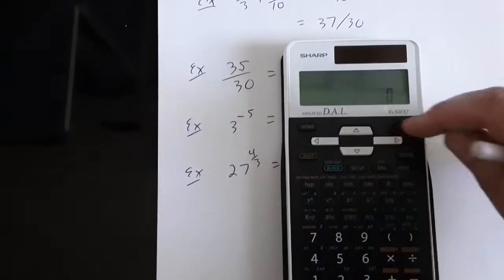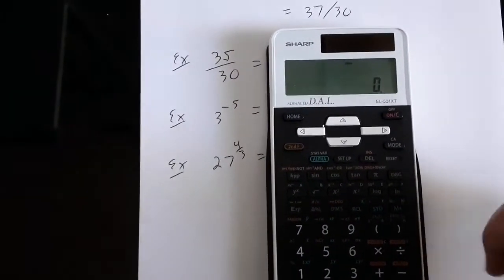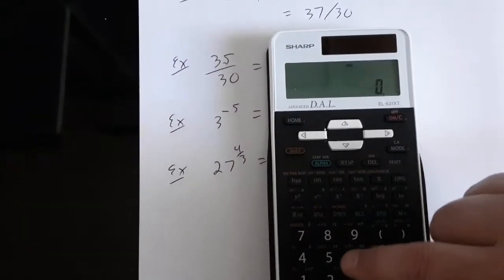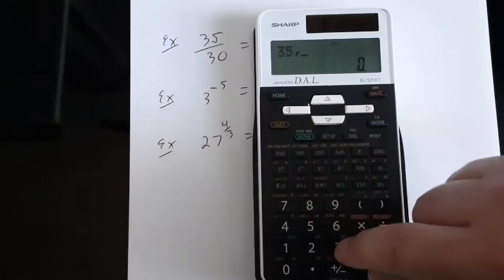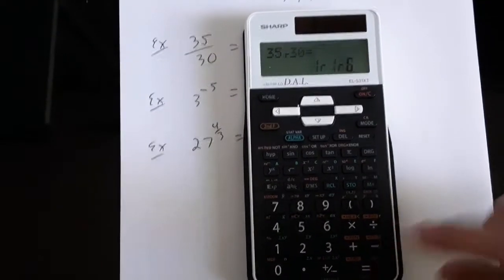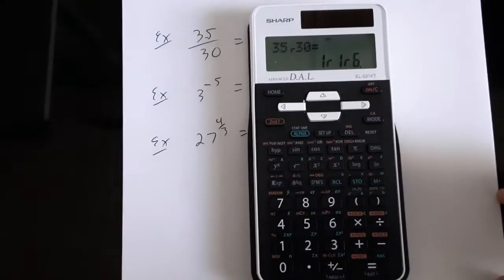Next, even if you just wanted to know, is my fraction in simplest terms, that's another thing the calculator can do for you. Here, if I were entering in 35 thirtieths, so 35 fraction 30, and if I were to hit equals, the calculator will put this in simplest terms. This is 1 and 1 sixth...